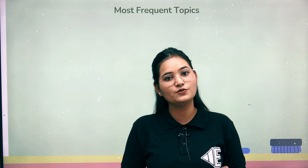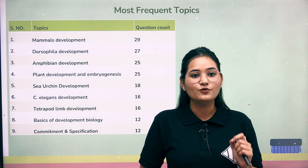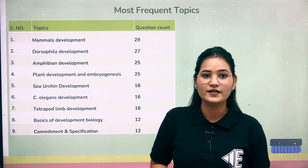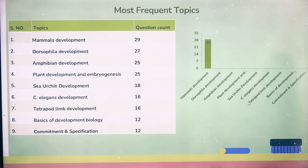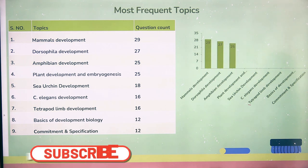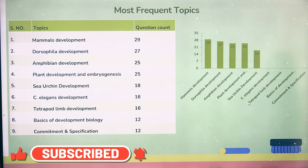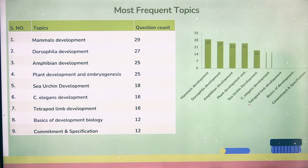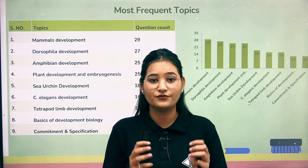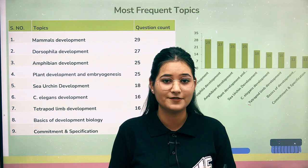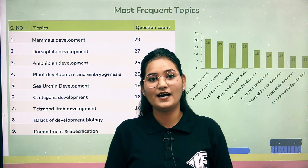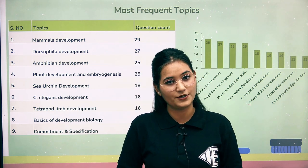We have divided the 15-year question paper analysis into three categories: first is most frequent topics, second is medium frequent topics, and third is less frequent topics. You should first prepare the most frequent topics. After that, our second category is medium and less frequent topics.